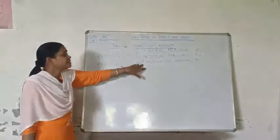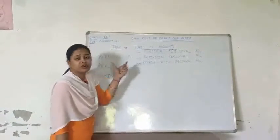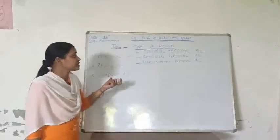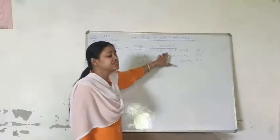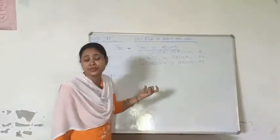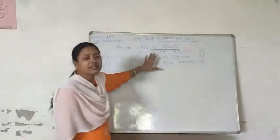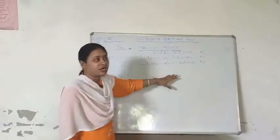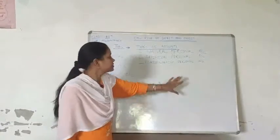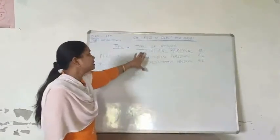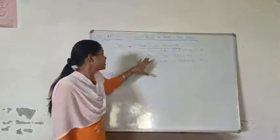First is natural personal account. Natural personal account is the account which is related to human beings — like Ram account, Shyam account, Zita account, Vita account. This is called natural personal account.